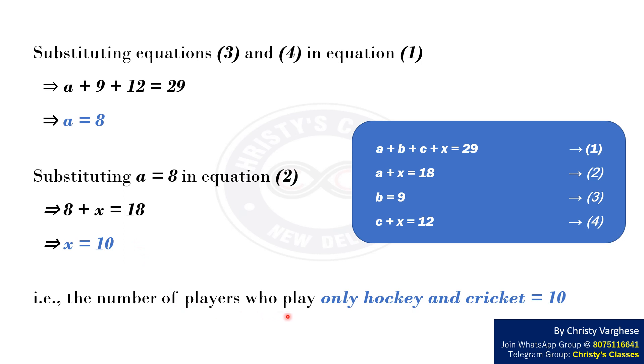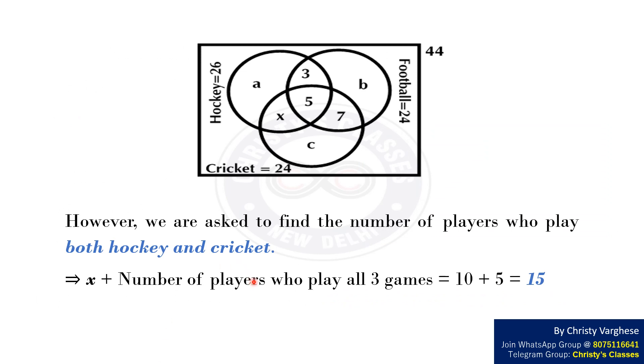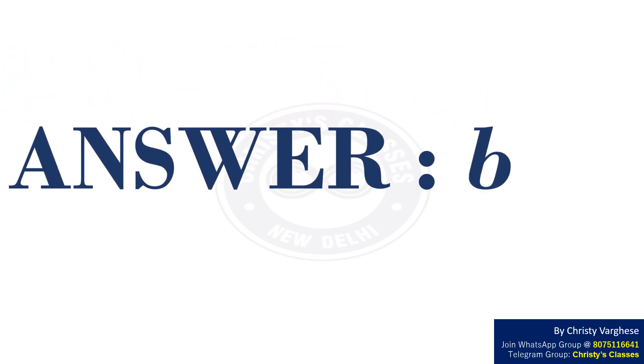That is, the number of players who play only hockey and cricket equals 10. However, we are asked to find the number of players who play both hockey and cricket. This equals X plus the number of players who play all 3 games, that is 10 plus 5 which equals 15. Hence, the right answer to the question is option B: 15.